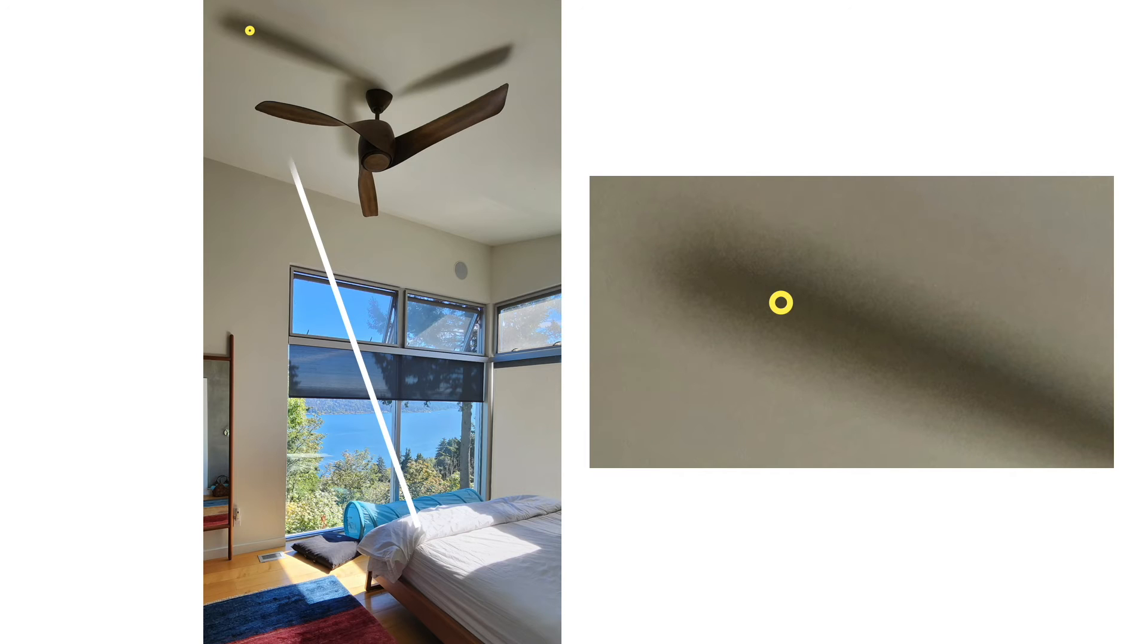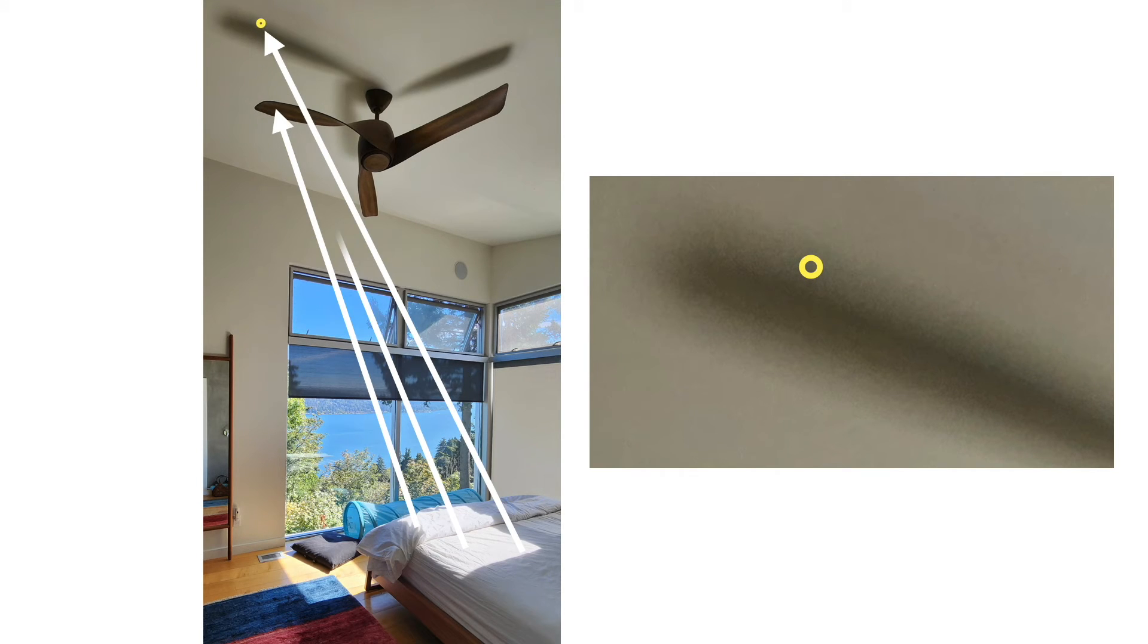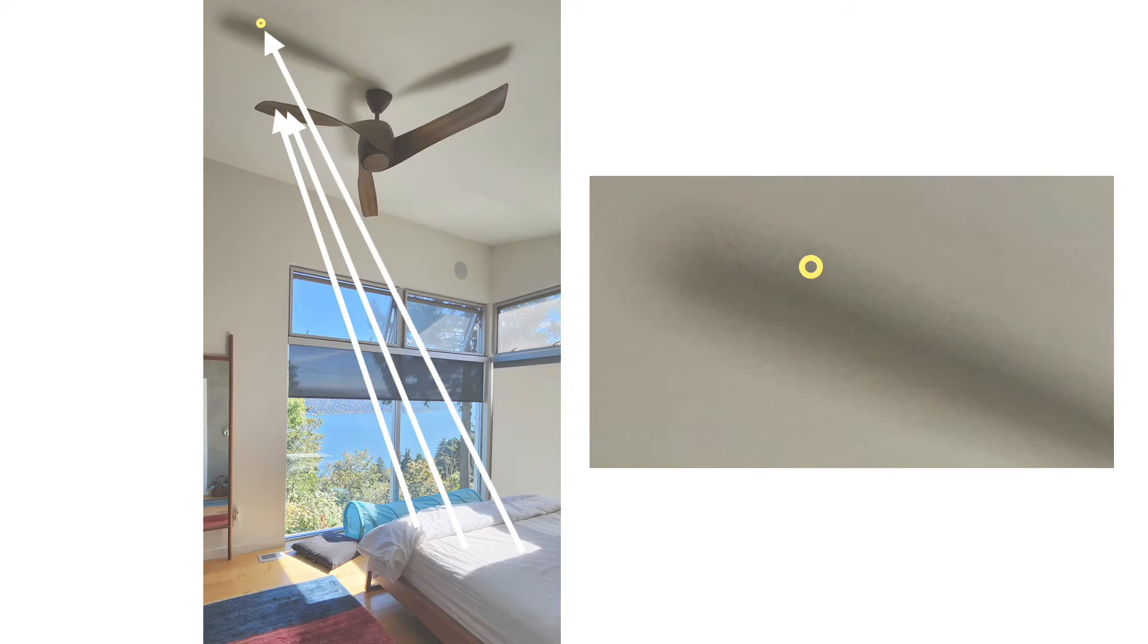None of the rays from our point light sources reach that point, which is why it looks so dark. But this point in the penumbra receives some of the light, so it's not quite as dark. All right, so now we know how to make soft shadows.